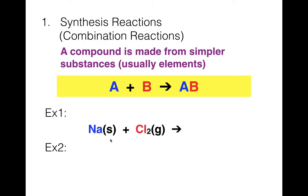Here are two examples of synthesis reactions. First, we have sodium and chlorine. Chlorine is diatomic, so it's Cl2. Since we're forming one product combining these two elements, we think about their charges: Na+ and Cl−, giving us NaCl as a solid. To balance: one Na on each side is good, but we have two Cl on the left and one on the right, so we put a 2 in front of NaCl, then a 2 in front of Na as well.